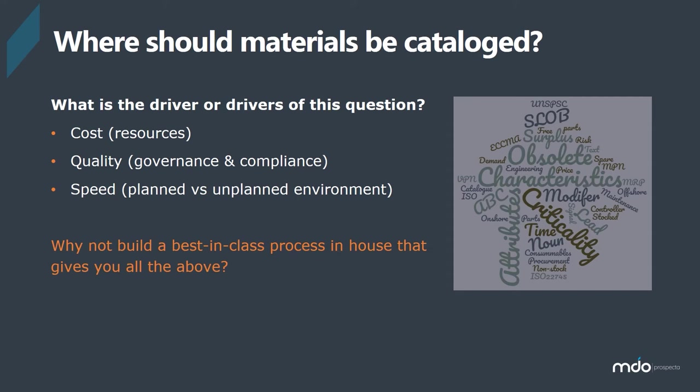Speed is another factor. It comes back to your demand — planned versus unplanned. If you have a lot of unplanned demand, you're going to have to catalog quickly, and that reduces quality and comes at a higher cost — but you still should catalog. Think about using tools in house with enrichment as a separate step. Once you have the number created, you have visibility and availability, and you can enrich and finish it later while working through the catalog.